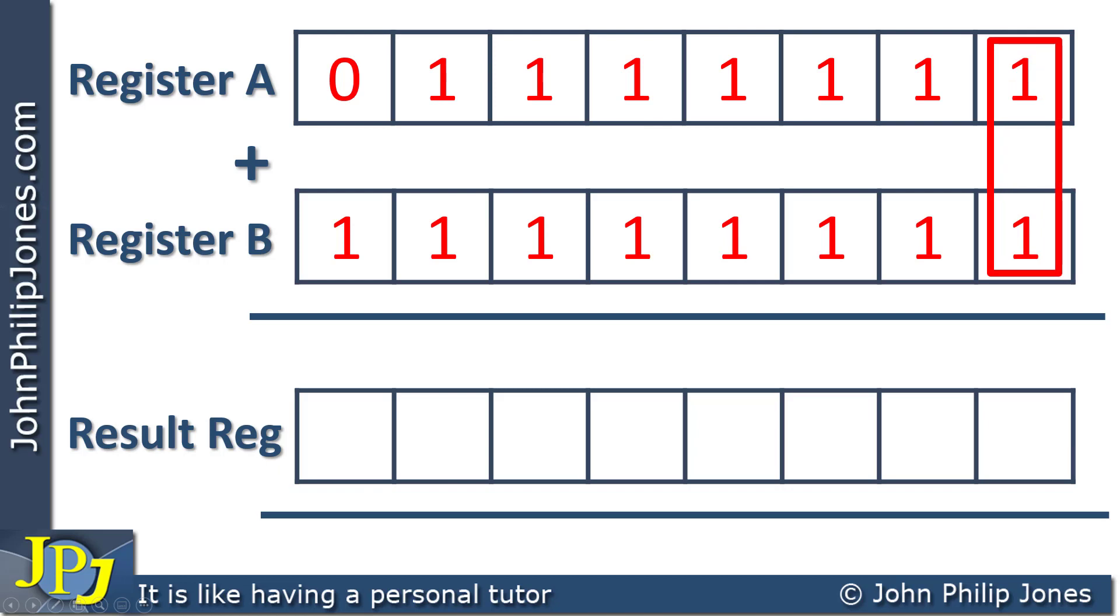Let's consider this column here. You can see I've got 1 plus 1, which is 2, which means it's 0 down and we carry 1.